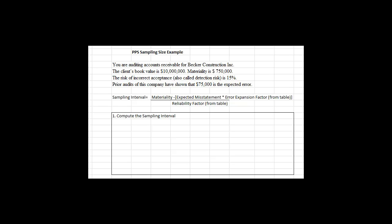It doesn't have to be perfect. The risk of incorrect acceptance in PPS sampling is the concept that it's possible at the end of sampling for us to accept the client balance as fairly stated when in fact that's an incorrect answer — we should be asking the client to make changes. This is also called detection risk.